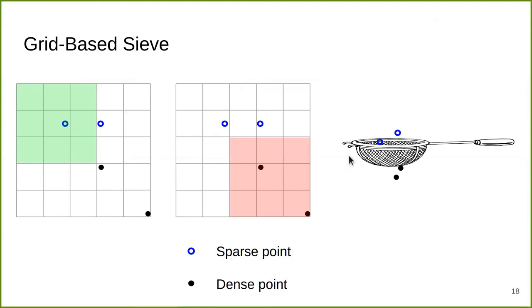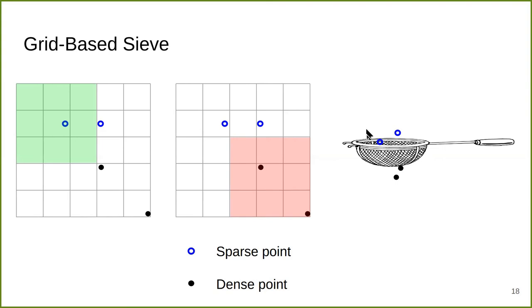In the implementation, we implement the sieve using a grid-based data structure, also done by previous work. Specifically, we impose an axis-aligned grid on the data points. For each point, we check its own box as well as the box neighborhood. If the entire neighborhood, including the center box, contains only the point itself, it is considered sparse. On the other hand, if a point has another point in its neighborhood, it is considered dense. Sparse points are retained by the sieve while denser points trickle down. The example shows that two sparse points can actually be closer together than two denser points, so it is not sufficient to find the closest pair only in the last level — bookkeeping is required.